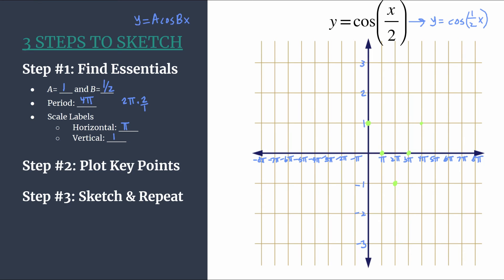We can move into step three. Sketch and repeat. So we sketch our characteristic cosine curve and we've got one cycle. And so you see that this cycle matches with the period. That fourth tick mark should always be that period value. The length of a horizontal cycle is 4 pi.